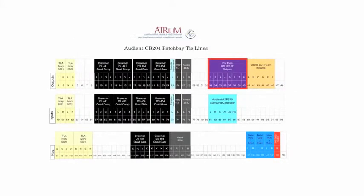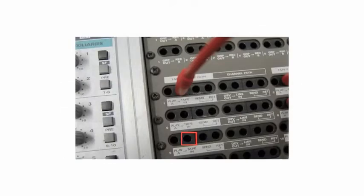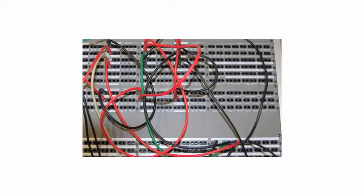Next you will need to patch the outputs from the second 192 unit. These are patch bay tie lines 33 to 40, and should be routed into the tape return path for channels 9 to 16 on the Audient Desk. Your patch bay will look something like this.